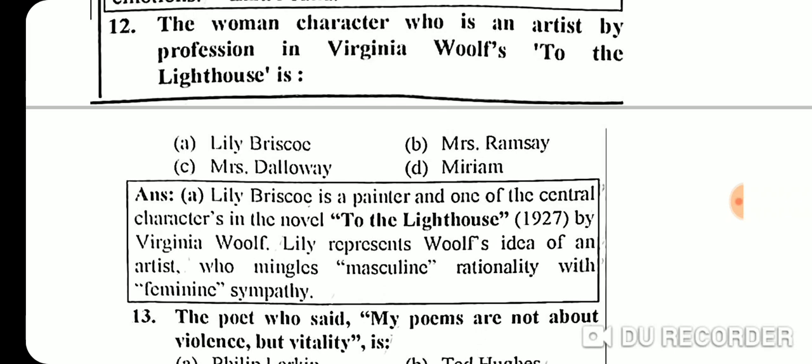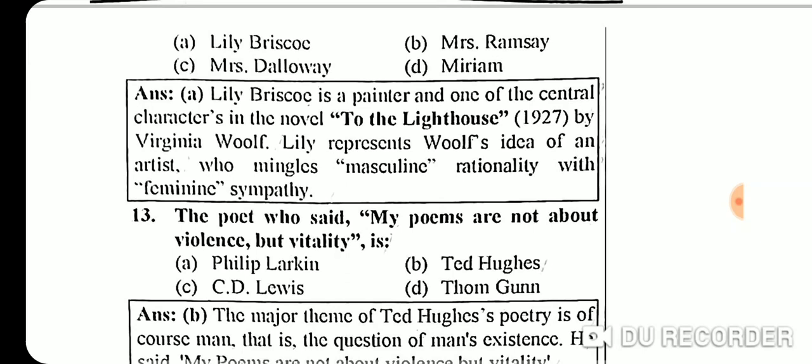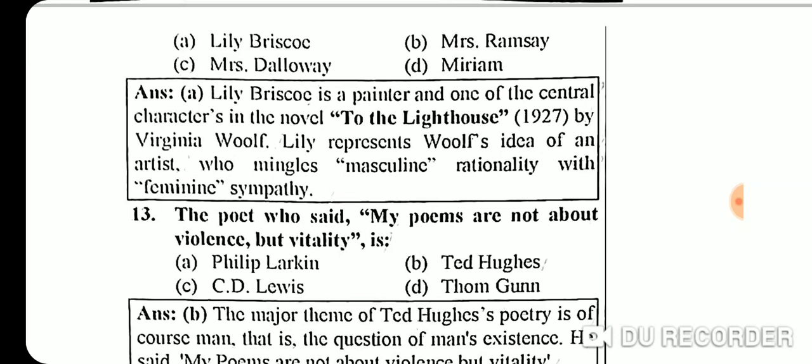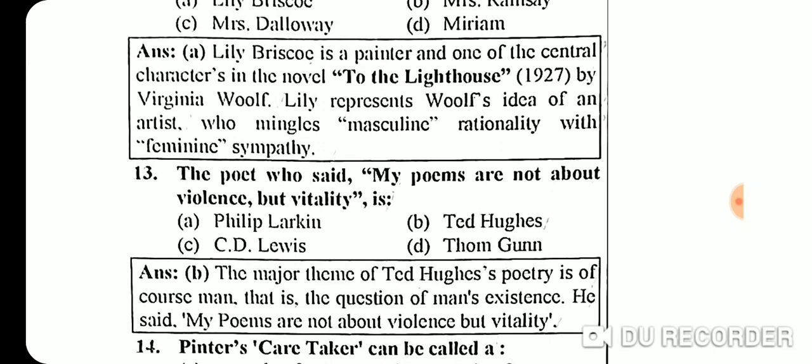Question 12: The woman character who is an artist by profession in Virginia Woolf's 'To the Lighthouse' is Lily Briscoe. She is a painter and one of the central characters in the novel published in 1927. Lily represents Woolf's idea of an artist who mingles masculine rationality with feminine sympathy.